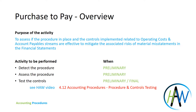The activities that have to be performed during the accounting procedures assessment are generally three main activities. First, you have to detect the procedure, and this activity is performed generally during preliminary. Then the second point is to assess the design of the process and the control of the process, and this activity is performed as well in preliminary.